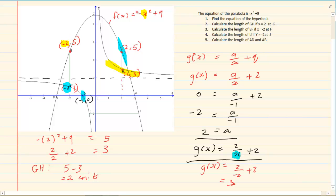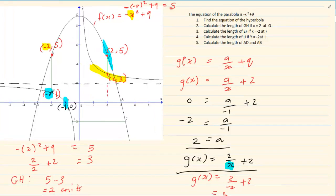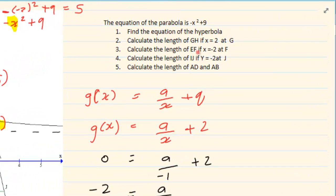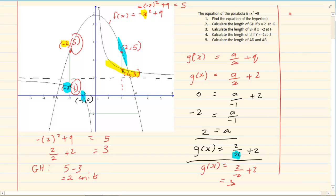If I am talking of this parabola, then I am working with my parabola equation. So I am going minus 2 squared plus 9 which equals 5. The general rule is: if I am given x to get y, I substitute into the original; if I am given y to get x, I substitute into the original. The length of EF is top minus bottom, so 5 minus 1 which is equal to 4 units.